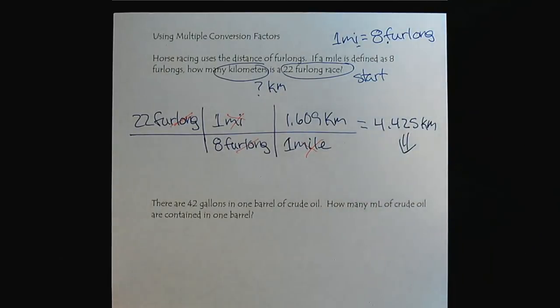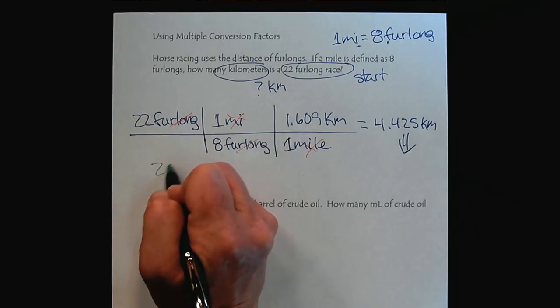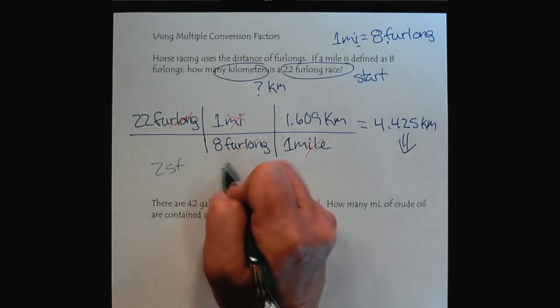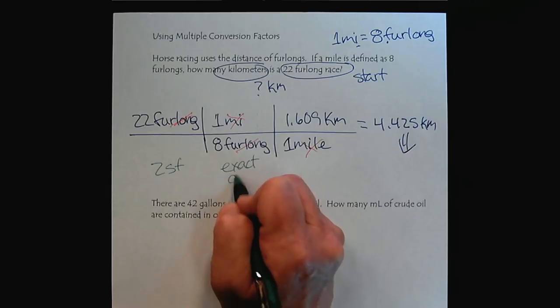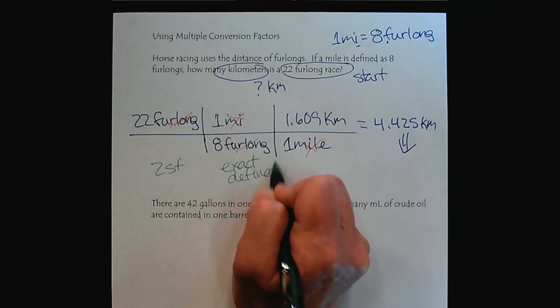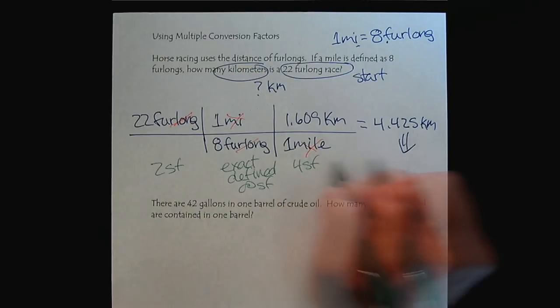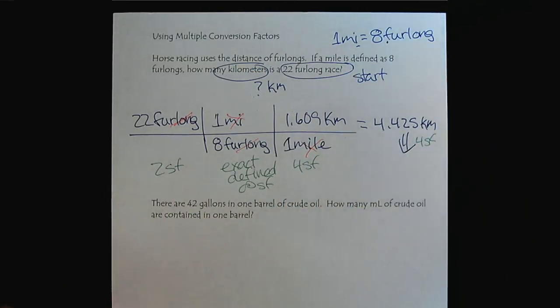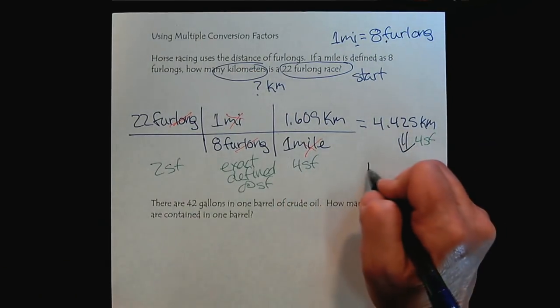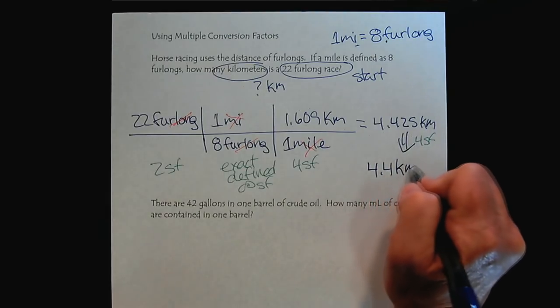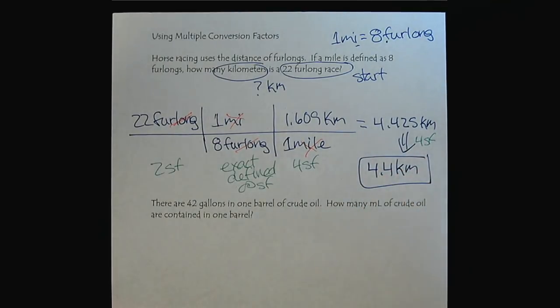And last but not least, let's check our sig figs. So we have 2 sig figs here. This is exact because it's defined. So it has infinite sig figs. And then we have 4 sig figs. So this race would be a 4.4 kilometer race.